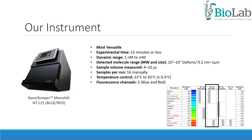Our instrument is the Nanotemper Monolith NT-115 blue-red configuration. It is very versatile. Each measurement experiment takes approximately 15 minutes of reading time, can detect KDs from 1 nanomolar to 500 micromolar, and requires minimal sample material — typically 1 to 10 nanomolar of the labeled interaction partner. For standard applications, 4 µL of sample material is loaded per capillary, and 16 capillaries are used per experiment. Temperature is controlled from 22 to 45°C. The monolith can monitor binding affinity between all kinds of biomolecules under close-to-native conditions, immobilization-free, in solutions ranging from standard buffers to complex bioliquids including blood serum and cell lysates.